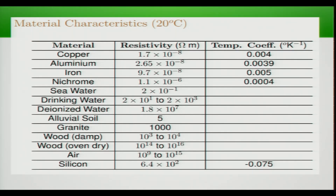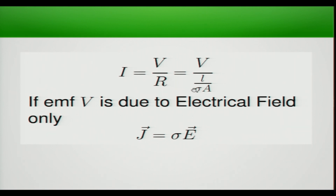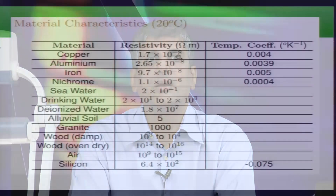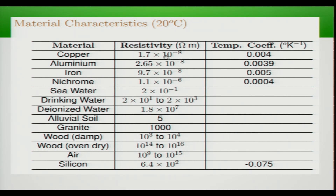Resistivity is the reciprocal of sigma (conductivity) and has dimensions of Ohm-meters. These material characteristics at 20 degrees Celsius are things an electrical engineer should know. The resistivity is a function of temperature. Copper has a resistivity of 1.7 × 10⁻⁸ Ohm-meters and is considered a good conductor. Silver is also very good. Aluminium has a resistivity of 2.65 × 10⁻⁸ Ohm-meters. Iron has a resistivity almost 6 to 7 times that of copper. Nichrome, a material used to make resistive elements, has a resistivity of 1.1 × 10⁻⁶ Ohm-meters.